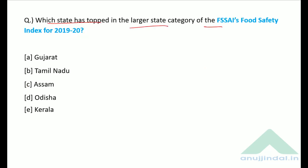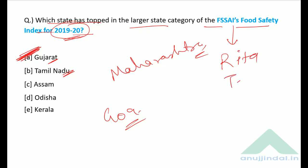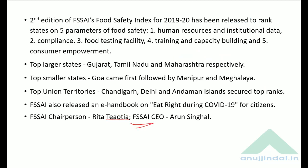Which state topped in the larger state category of the FSSAI Food Safety Index for 2019-20? In the larger state category, number one is Gujarat, number two is Tamil Nadu, and number three is Maharashtra. Among smaller states, number one is Goa. FSSAI is headed by Rita Teotia as chairperson and the recently appointed CEO is Mr. Arun Singhal.